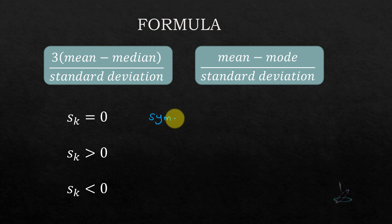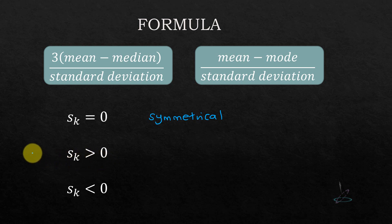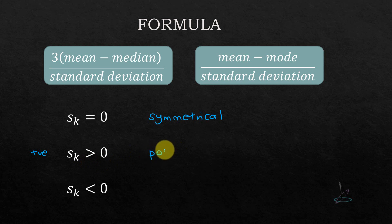If SK is equal to zero, the data is symmetrical. If the Pearson coefficient of skewness is greater than zero, that means it is a positive number, so the distribution is positively skewed.